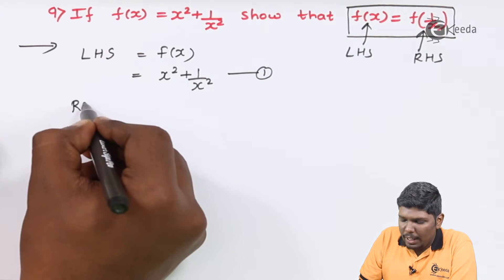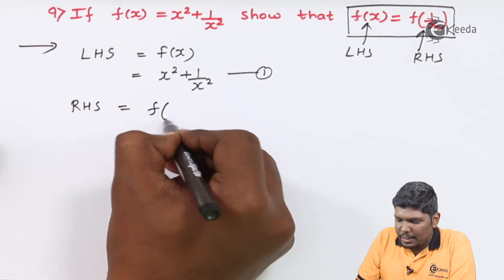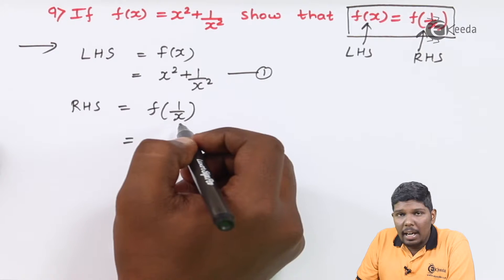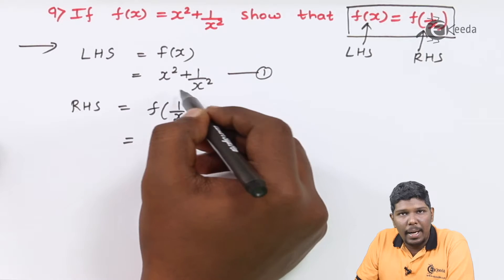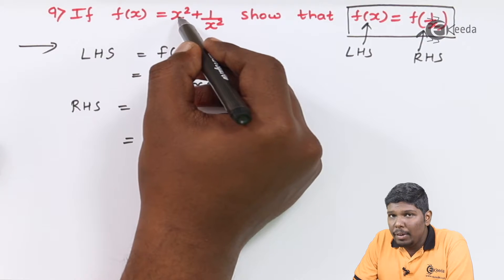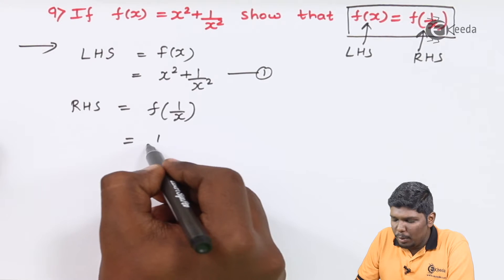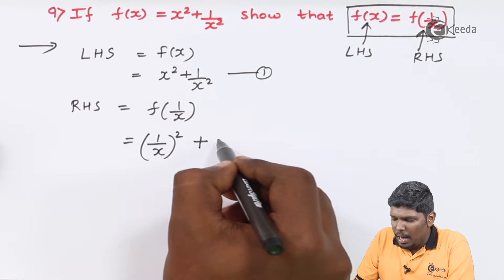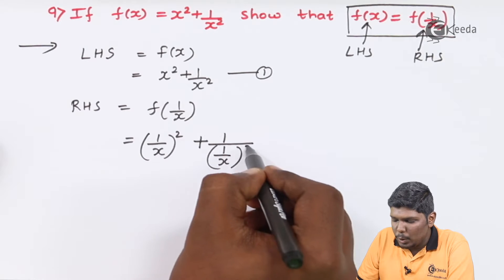Now let us consider the RHS, which is f(1/x). In the given function f(x) = x squared plus 1 by x squared, we will substitute x as 1 by x. So wherever we have x, we will put 1 by x. So x becomes 1 by x, the power becomes 2, then plus 1 upon x, where x again becomes 1 by x, squared.